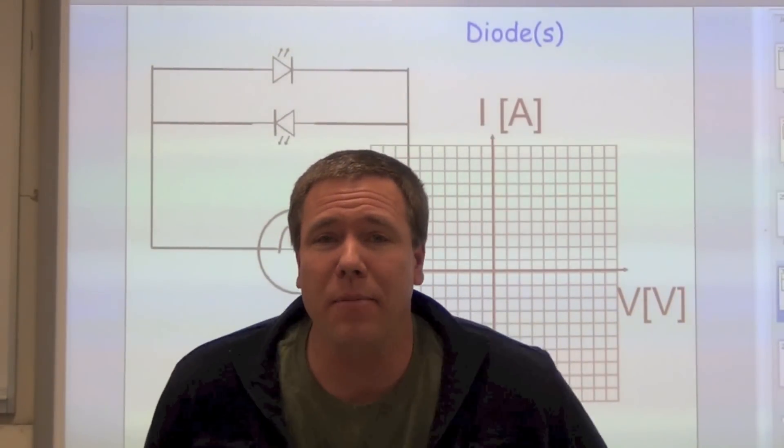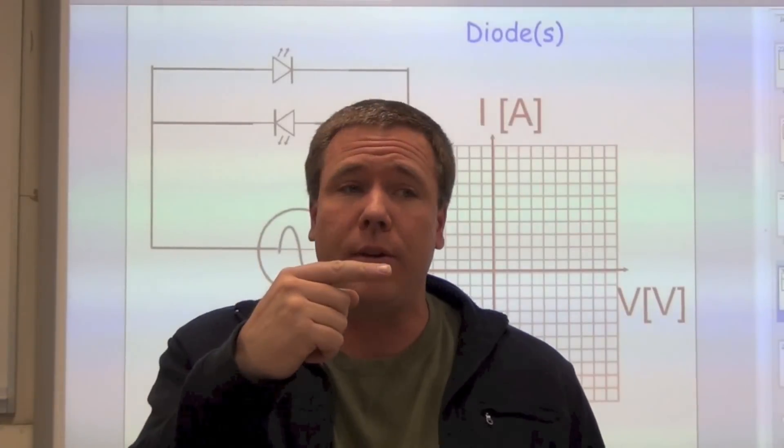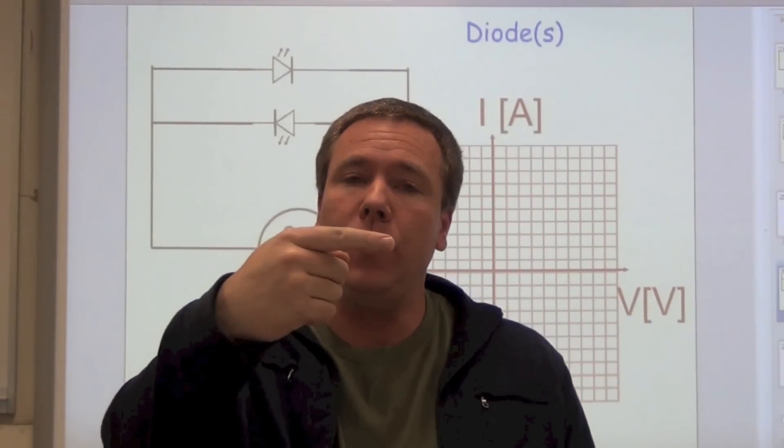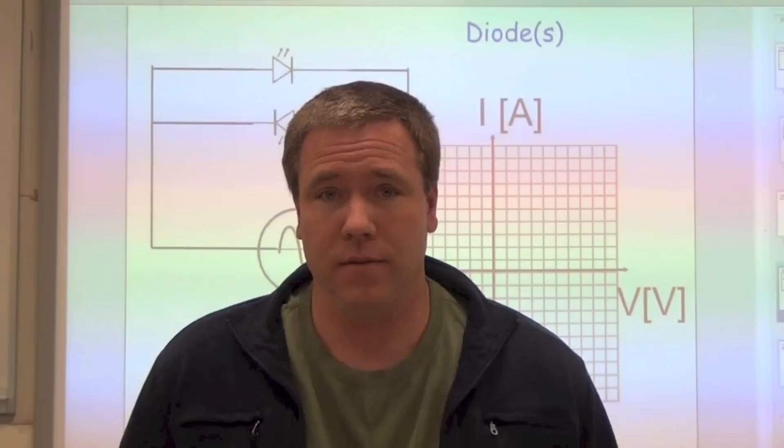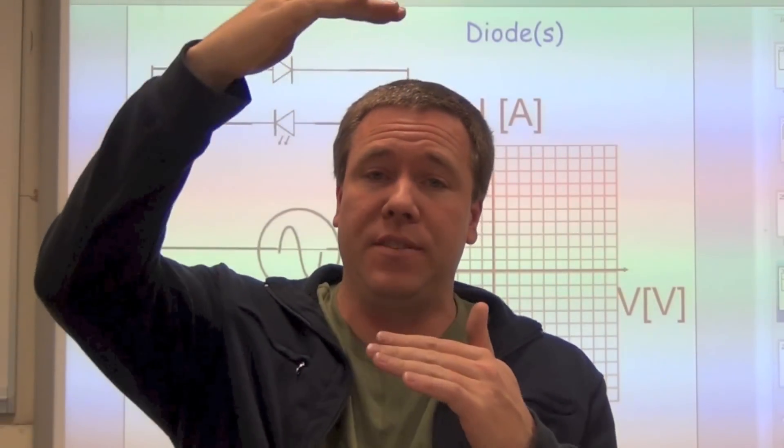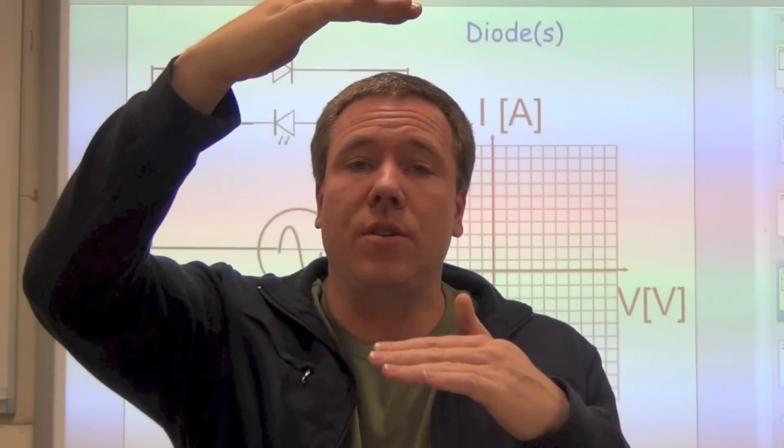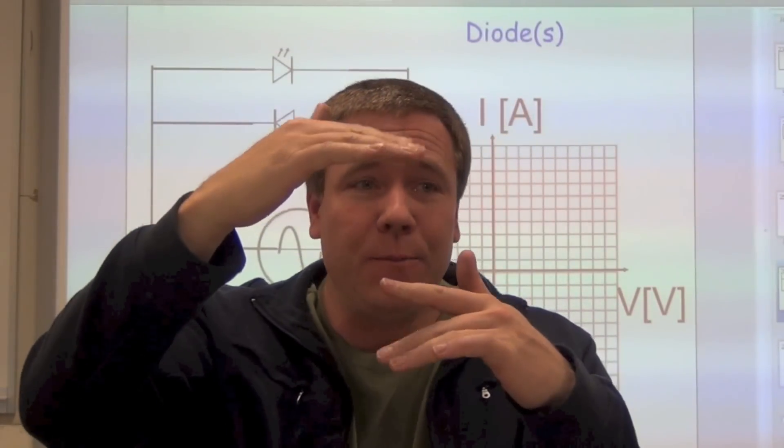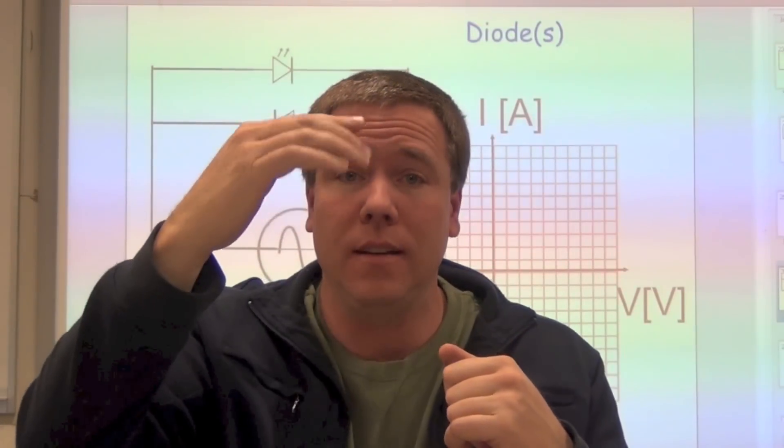So that's the second job of a diode. It's to say, okay, current, you can go through this direction, but only if what? If the voltage is above a certain point. We call that the voltage threshold. So as long as the voltage potential is above a certain value, then it will allow current through. If the voltage potential is less than that value, then no current will get through in the correct direction. It'll be held.